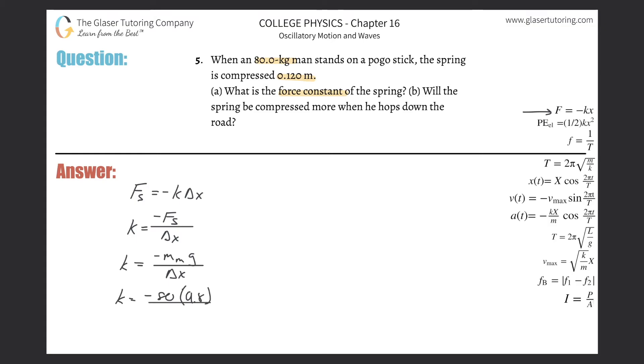K should work out to be positive, so don't go too crazy with the signs here. Just know k has to be positive. So there's going to be 80 times 9.8 divided by 0.12.